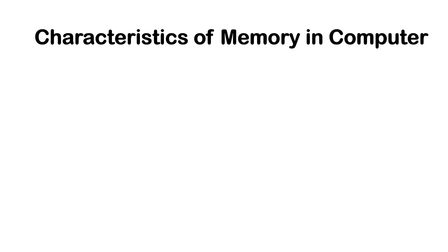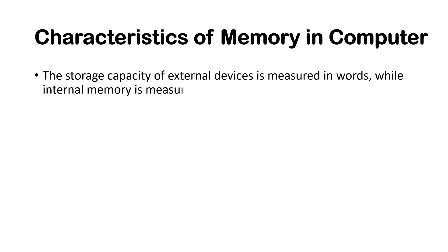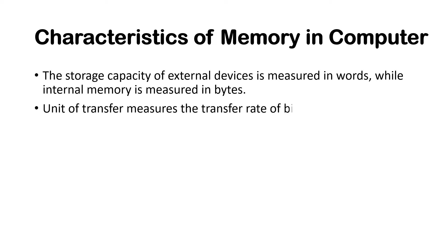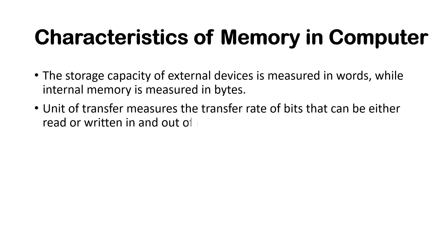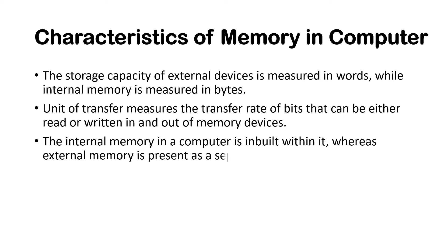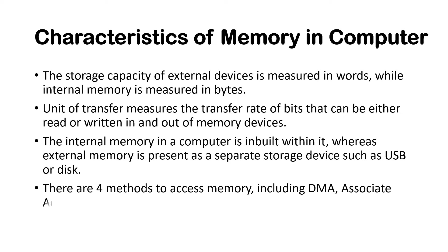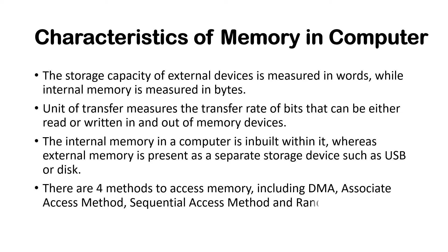What are the characteristics of computer memory? The storage capacity of external devices is measured in words, while internal memory is measured in bytes. Unit of transfer measures the transfer rate of bits that can be either read or written in and out of memory devices. The internal memory in a computer is inbuilt within it, whereas external memory is present as a separate storage device such as USB or disk. There are four methods to access memory, including DMA, associate access method, sequential access method, and random access method.